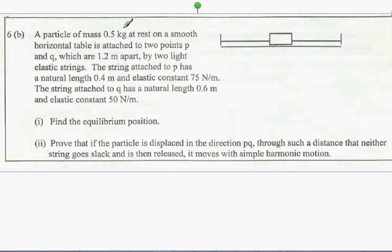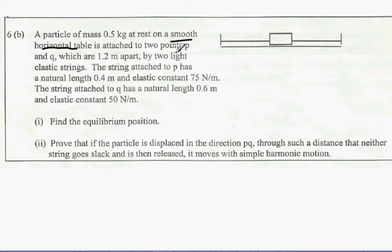Now, a particle of mass 0.5 kilograms rests on a smooth horizontal table attached to two points P and Q, which are 1.2 meters apart. The string attached to P has a natural length of 0.4 and an elastic constant of 75 newtons per meter. The string attached to Q has a natural length of 0.6 meters and an elastic constant of 50 newtons per meter. Find the equilibrium position.